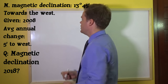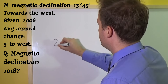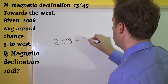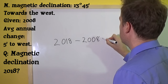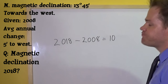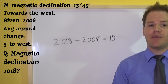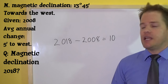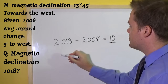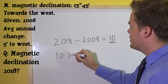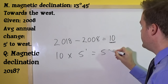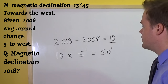Let's start with the calculations. First, we need to calculate the difference in years: 2018 minus 2008, which gives us 10 years. Then we calculate the magnetic change: 10 years times 5 minutes per year, which gives us a total of 50 minutes.